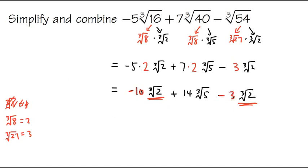This is going to be equal to negative 10 minus 3, that's negative 13, and then we keep the same term. We maintain the cube root of 2.